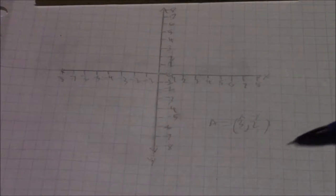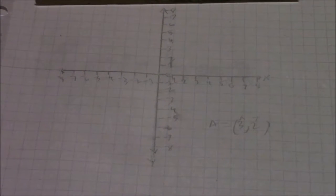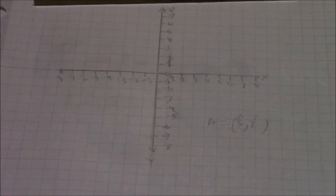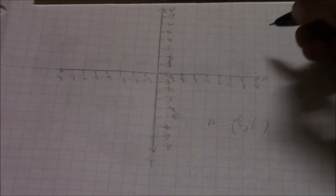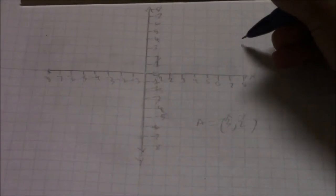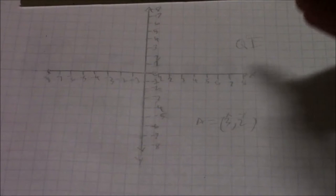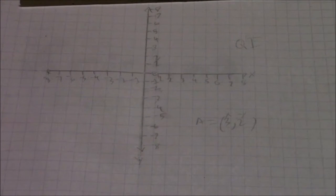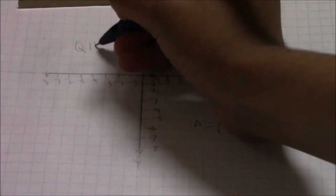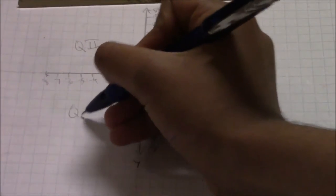Y is this axis and X is this axis. We're going to look at the quadrants. I'll show you the quadrants now. Whenever you label a quadrant, you use a Roman numeral. This is quadrant 1, quadrant 2, quadrant 3, and quadrant 4.